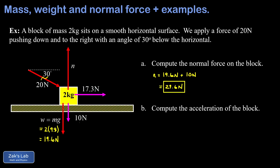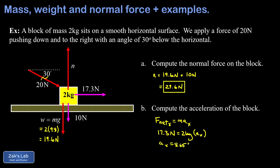In part B, we compute the acceleration of the block, which happens in the horizontal direction. Since the surface is horizontal and the block is constrained to it, the only acceleration is in the x direction. There's only one horizontal force — the 17.3 newton x component. Applying Newton's second law in the x direction: F net equals 17.3 newtons equals mass times ax, with mass equal to two kilograms. Dividing, we get an x acceleration of 8.65 meters per second squared.